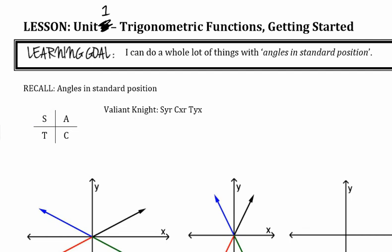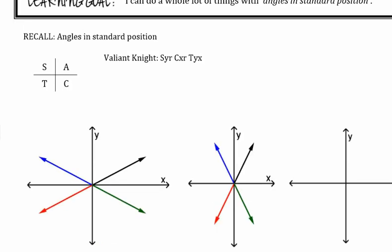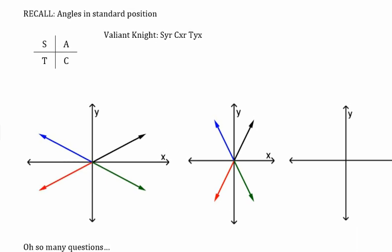Let's take a look at the CAST rule. What does the CAST rule tell us? It tells us where cosine, sine, and tangent are positive. In the second quadrant, sine is positive because it's the 'S' there, and everything else is negative. The 'A' stands for All — they're all positive in that first quadrant. That comes back to what we were just looking at: the x and y coordinates.